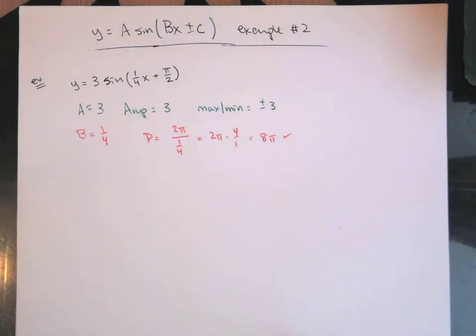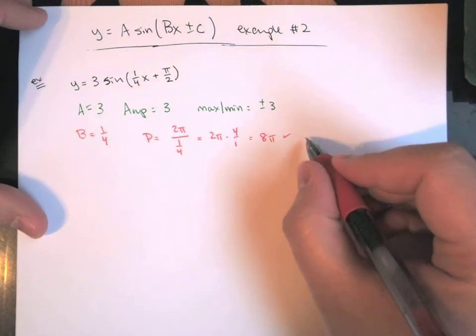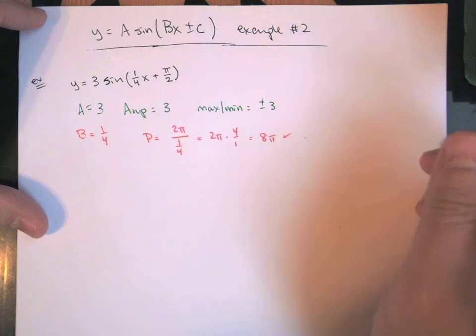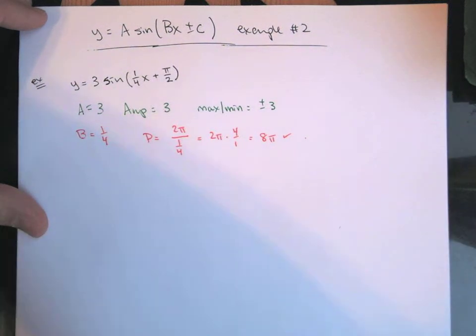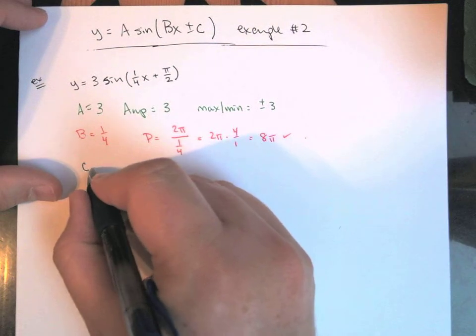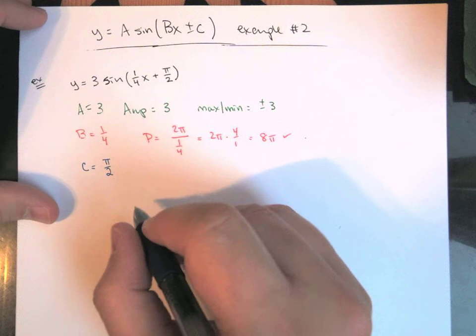This is sort of in sniffing distance to a whole number rather than having to do everything with fractions. If I look at, well, we'll save that till we do the points, I think that works. The C value in this case is positive π over 2.